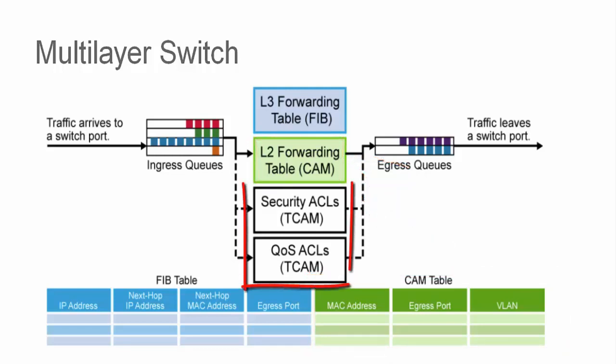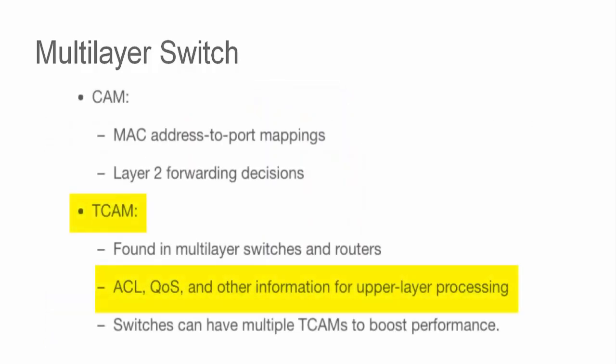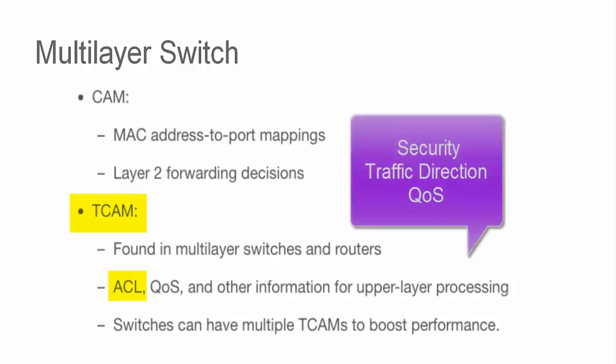The TCAM table is comprised of layer 3 information which includes access control lists and quality of service configurations. The ACLs are used to define interesting traffic and can be used for a variety of purposes including security, traffic direction, and QoS.